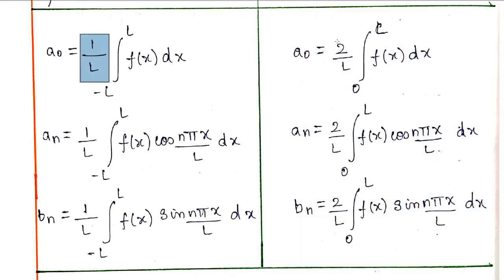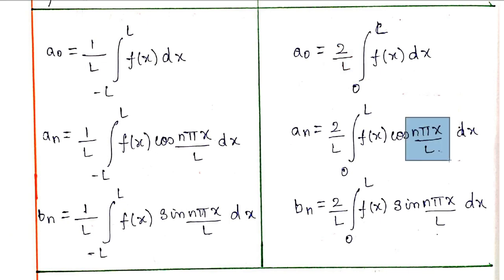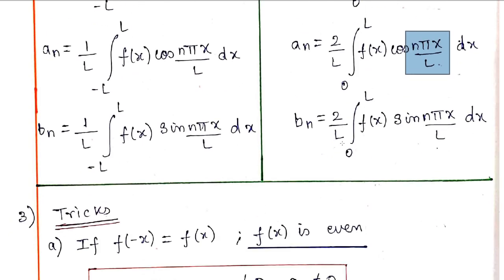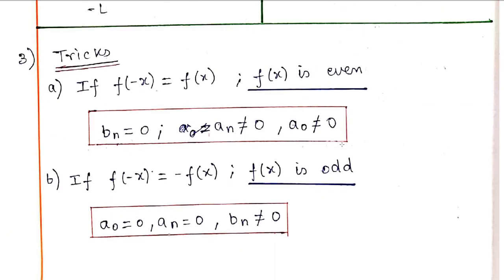In this case, there is 1 by L and 2 by L. There is n pi x by L — that is the difference. Note that there is a difference.